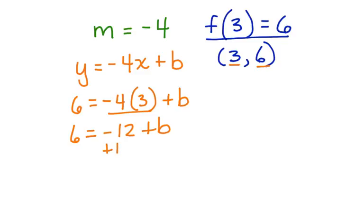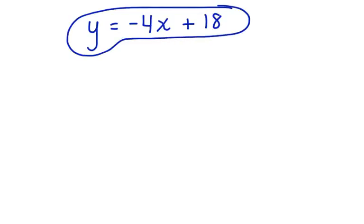And if I add 12 to both sides, I have 18 is equal to b. My final equation is y equals negative 4x plus 18. Here's my equation in slope-intercept form, and my work is now complete.